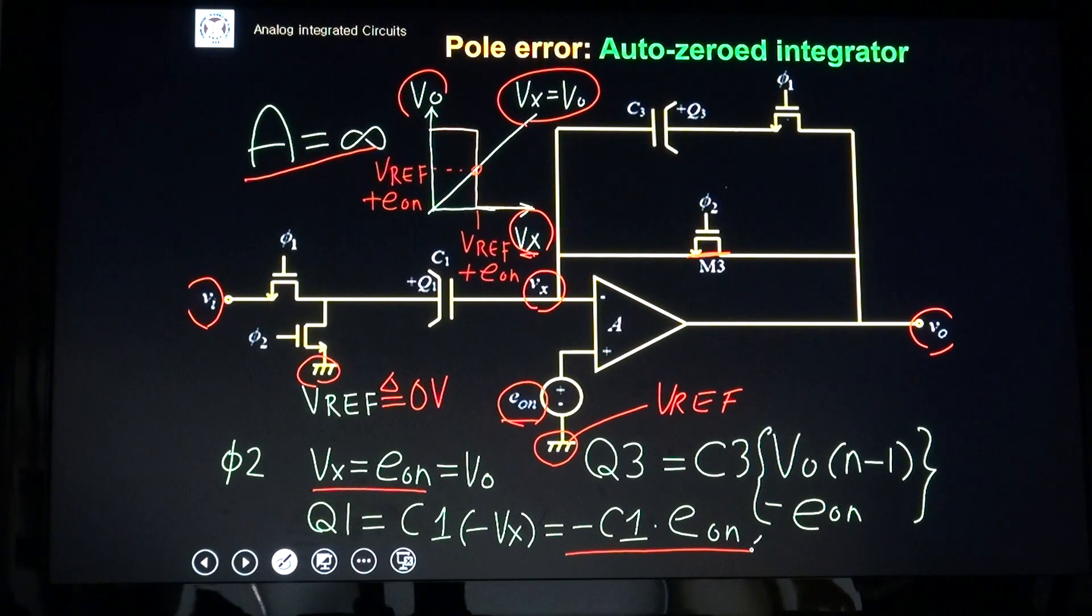How about the Q3 charge here? Q3 charge remains the same during the φ2 phase, because this switch is turned off, no current flows into C3. And then, Q3 is just Q3 in the preceding φ1 phase, which is TN minus 1. In that case, Q3 is Q3 VO(n-1), input offset voltage is EON.